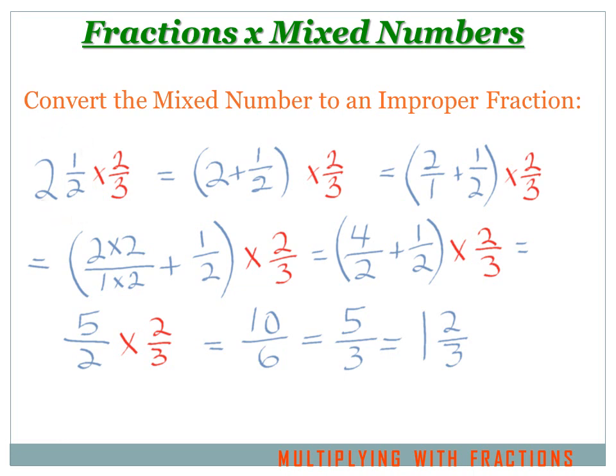You'll see I'm carrying 2 thirds forward into every iteration of this expression — where you see that red 2 thirds, it's going to stay the same. The only thing we're going to manipulate or change is the 2 and 1 half. So the first thing we're going to do is change the 2 and 1 half into 2 plus 1 half, times 2 thirds. Now I want to add the 2 and the 1 half, but I've got to get a common denominator. So I first change it to 2 over 1, plus 1 half, and I take the 2 over 1 and multiply top and bottom by 2, then add that to the 1 half and multiply times 2 thirds.